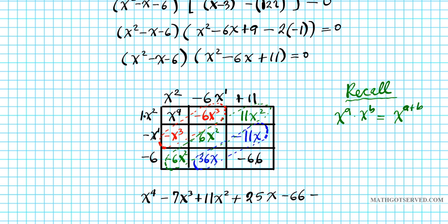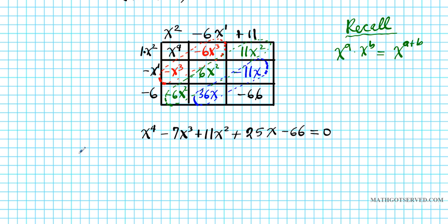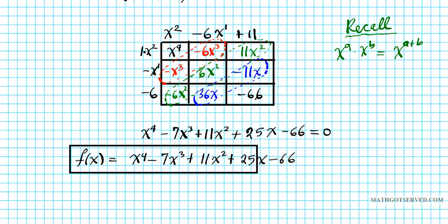I just set that equal to zero. This is a related polynomial equation. So the polynomial function with the roots stated above is f(x) = X^4 - 7X³ + 11X² + 25X - 66. So this is your final result.